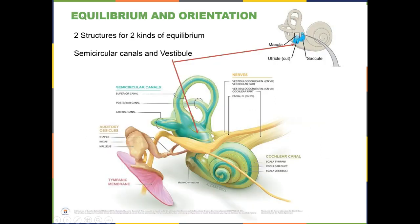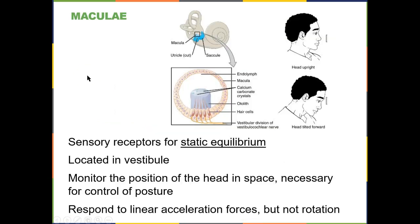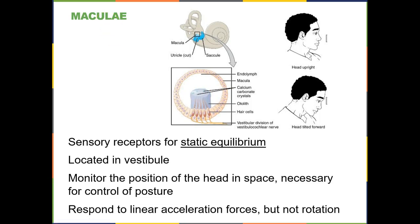Now we're on to equilibrium. There are two different kinds of equilibrium detected by two different structures. First is static equilibrium, which has to do with changes in linear acceleration — starting, stopping, moving left or right — and also the position of your head. Tilting your head forward is neurologically the same as slowing down in your car. The structure that detects changes in static equilibrium is called the macula.